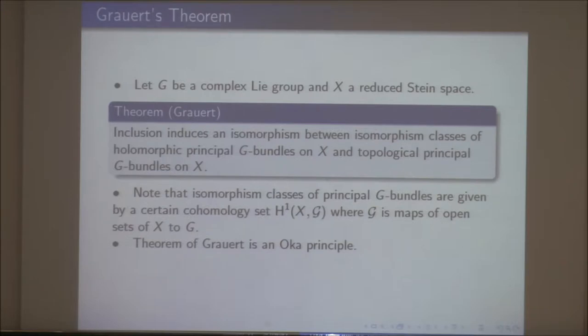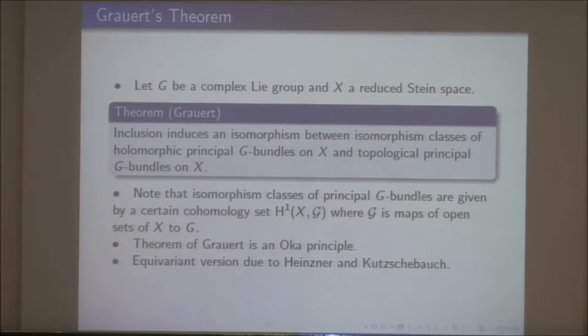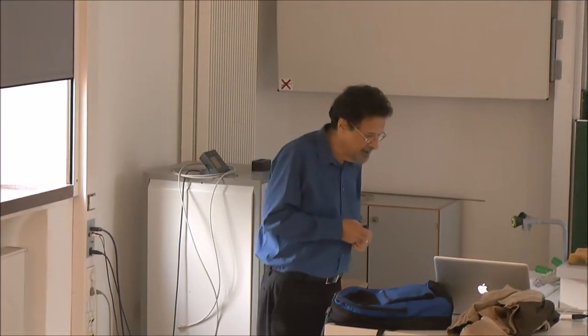Grauert's theorem is just an Oka principle. There's also an equivariant version of the Oka principle due to Heinzner and Kutzschebauch. You can have principal G-bundles on X with another complex Lie group acting on the total space and on the base, equivariantly. They proved a version of Grauert's theorem with this extra symmetry group, and this equivariant version will come in later in the talk.